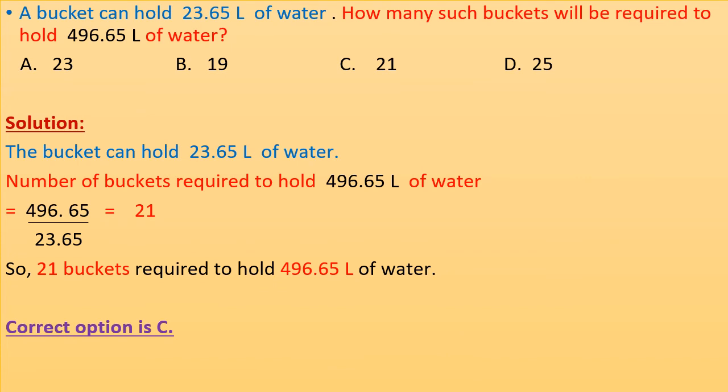A bucket can hold 23.65 liters of water. How many such buckets will be required to hold 496.65 liters of water? Number of buckets required = 496.65 ÷ 23.65 = 21. So 21 buckets are required to hold 496.65 liters of water.